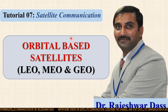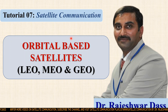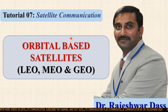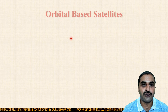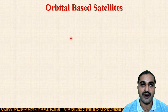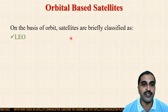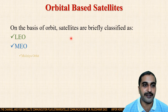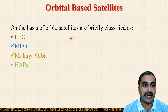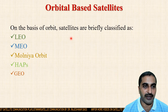In the previous session, we discussed the advantages and disadvantages of satellite communication. In this session, I am going to discuss orbital-based satellites. Specially I will discuss LEO, MEO, and GEO. The path in which the satellite rotates is known as the orbit. On the basis of orbit, satellites are classified as LEO (low earth orbit), MEO (medium earth orbit), Molniya orbit satellite, high altitude platform satellite, and GEO (geosynchronous earth orbit) satellite.